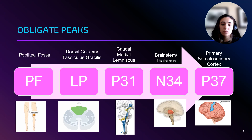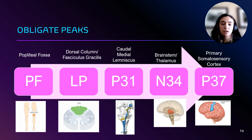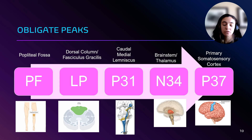Just as with upper extremity SSEPs, there are specific obligate peaks for the lower body, including the popliteal fossa (the depression behind the knee), LP representing the dorsal column and fasciculus gracilis, P31 representing the caudal medial lemniscus, N34 representing the brainstem and thalamus, and P37 representing the primary somatosensory cortex.